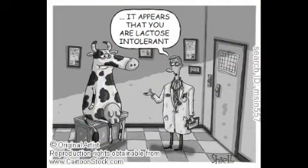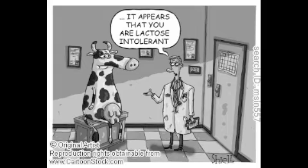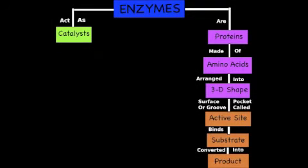Lactose intolerance is an example of how a denatured enzyme, or missing enzymes, can affect a person. People whose intestinal cells don't have enzymes called lactase can't digest milk sugar, known as lactose. So we learned today that enzymes act as a catalyst, and are proteins made up of amino acids arranged into 3D shapes, which have surfaces or grooves called active sites, which bind substrates and convert them into products.